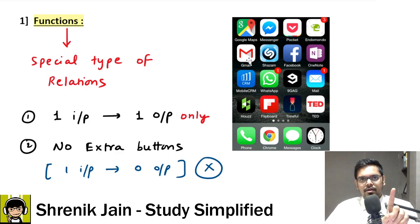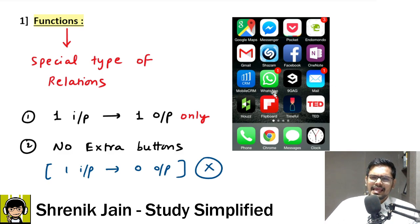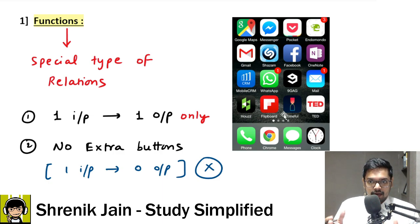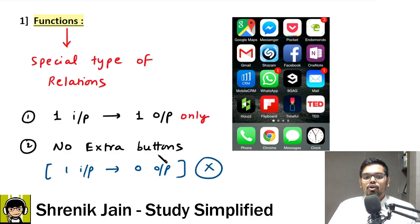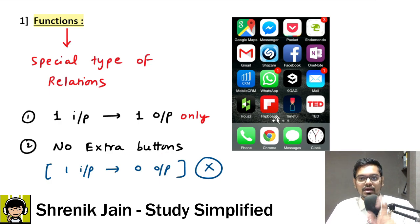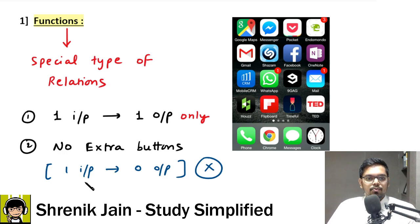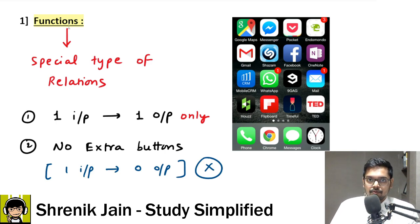Now think about this: if I click on Gmail, can I expect Gmail won't open? No. If I click on any app, can I expect no app will open? That scenario is not possible. Therefore in functions there are no redundant buttons — every input must lead to some output. One input leading to zero output is not possible in a function.